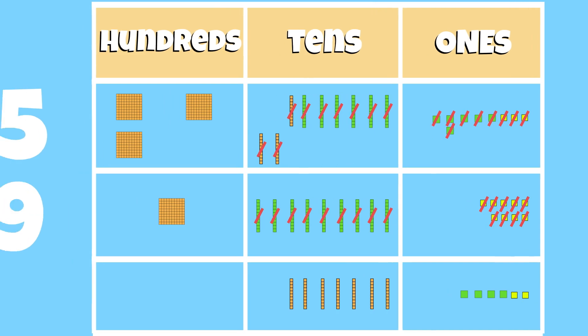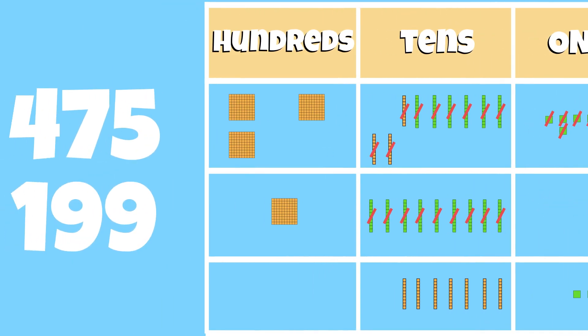We can now subtract 100 from 300. 3 minus 1 leaves us with 2 groups of 100. Our final answer is 276.